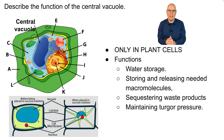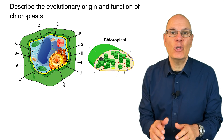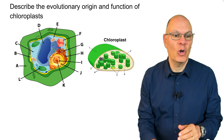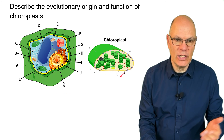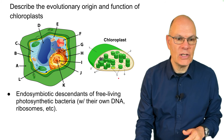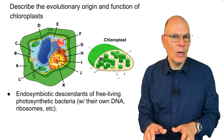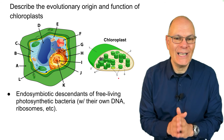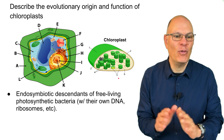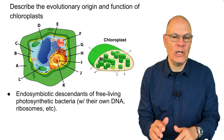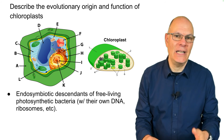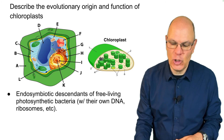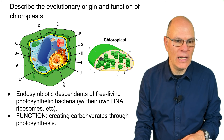Chloroplasts are the endosymbiotic descendants of free-living photosynthetic bacteria, and that's why they have their own DNA, their own ribosomes, and two membranes.